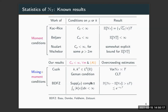Where do our results fit in? Our results fall somewhere between these two sets. We assume finiteness of all moments and an additional assumption A1, which is not a very stringent condition. Under these two assumptions, we get overcrowding estimates. In terms of conditions on mu, our results fall in the first category — we do not assume much about mu — but surprisingly, with these somewhat weak assumptions, we still manage to get strong conclusions.